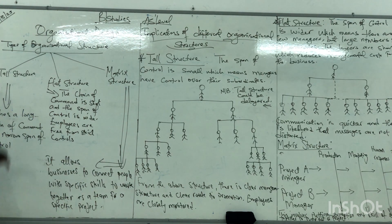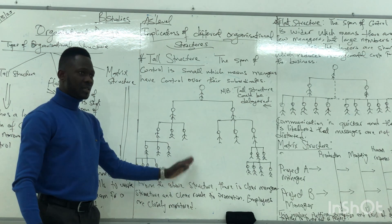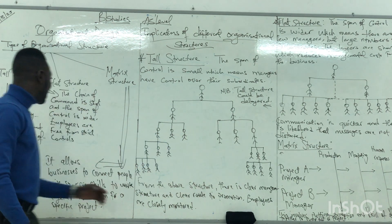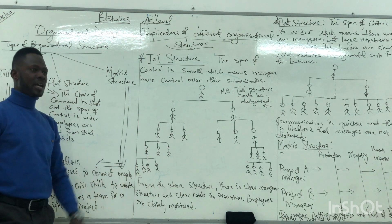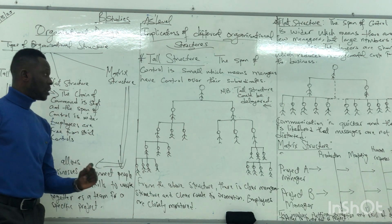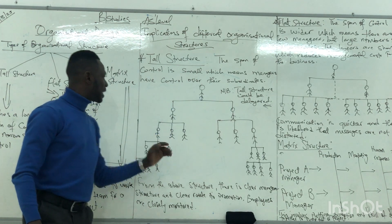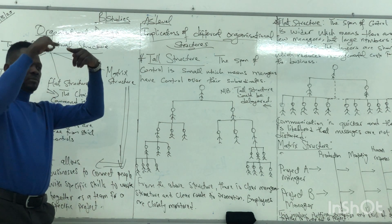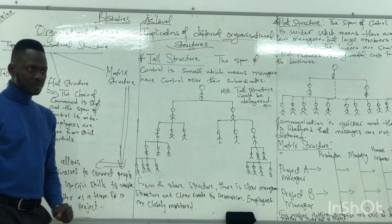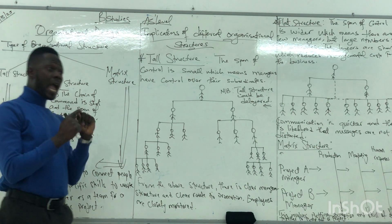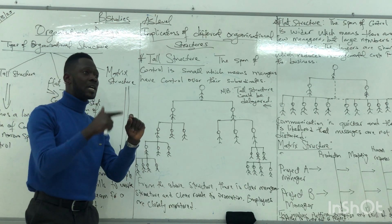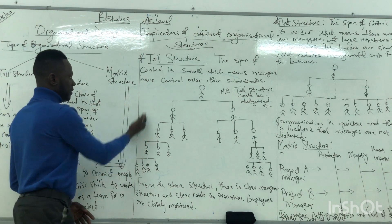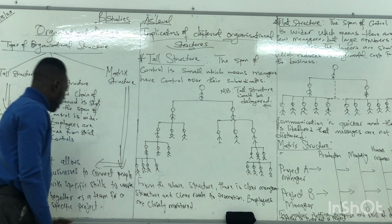Let's talk about the tall structure. We call it a tall structure because it has different levels of hierarchy. Hierarchy is the order in which authority passes across within the organization. So the structure is very tall — this is a tall hierarchy. It has a long chain of command.